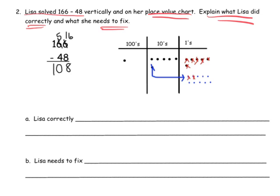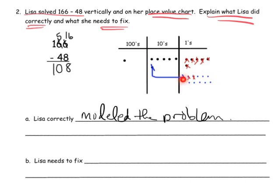What did she do correctly? She correctly modeled the problem. We can see she has 6 ones and needs to take away 8, so she has to unbundle. She takes one of the tens and cashes it in for 10 ones — she does that correctly. So she correctly unbundled. Now the question says to take away 8 ones — she took away 1, 2, 3, 4, 5, 6, 7, 8 — leaving 8 ones left over. So she's good so far.